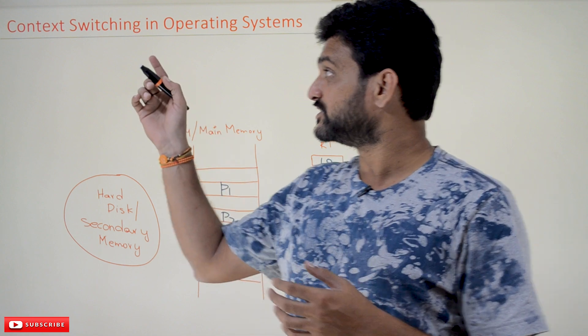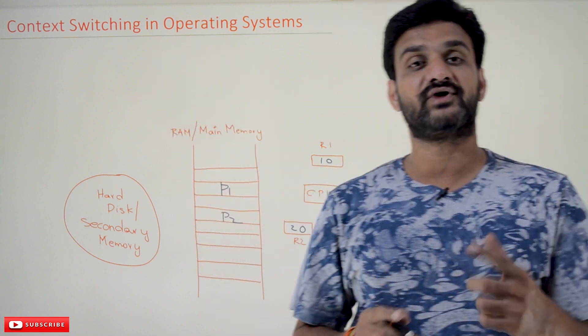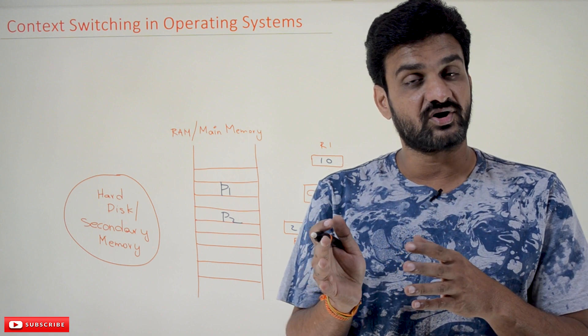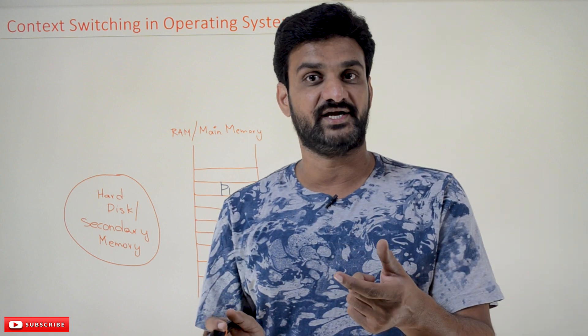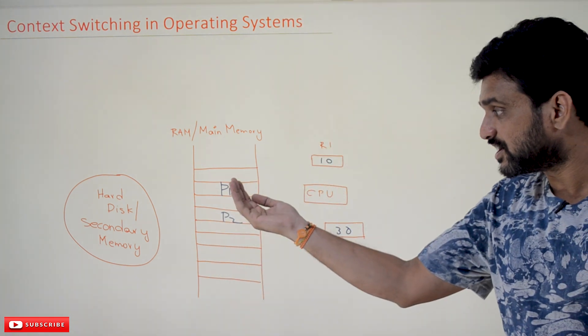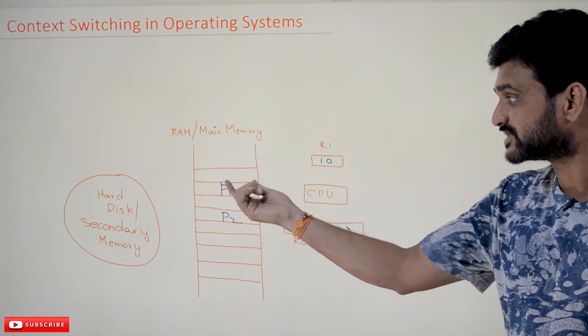Okay, so this is what we call context switching. So this context switching is pure overhead. The time taken by that context switching is pure overhead.